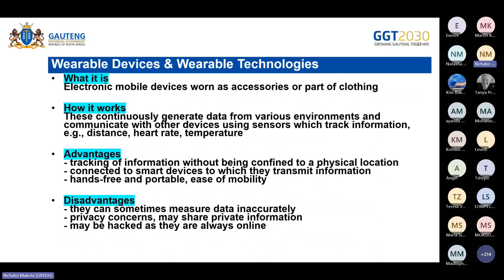What is a wearable device? It is an electronic mobile device worn as an accessory or as part of clothing. It continuously generates data from various environments and communicates with other devices using sensors, which track information such as distance, heart rate, and temperature.